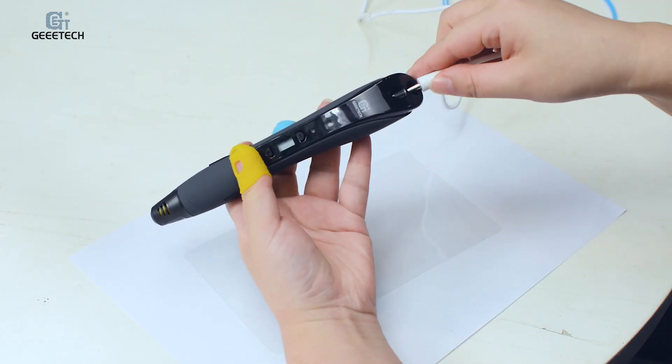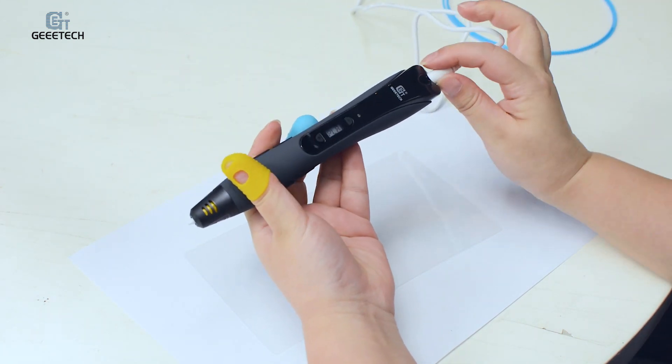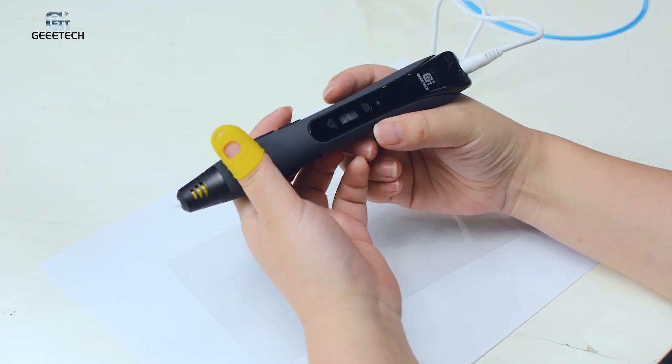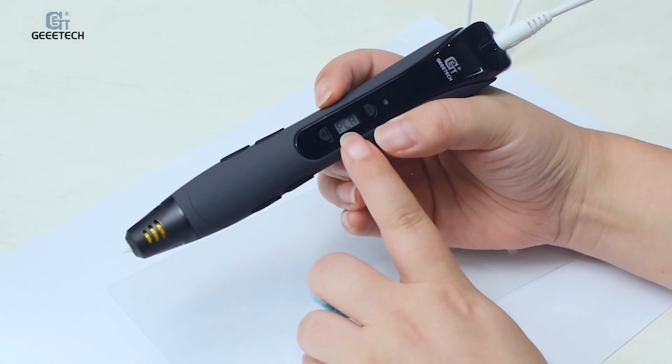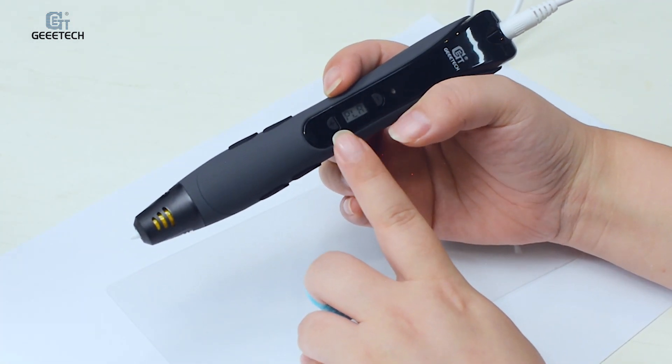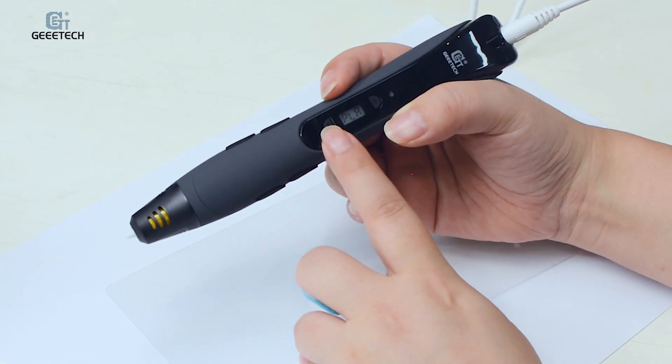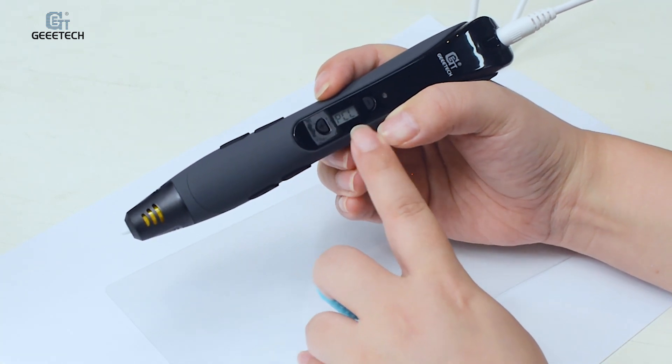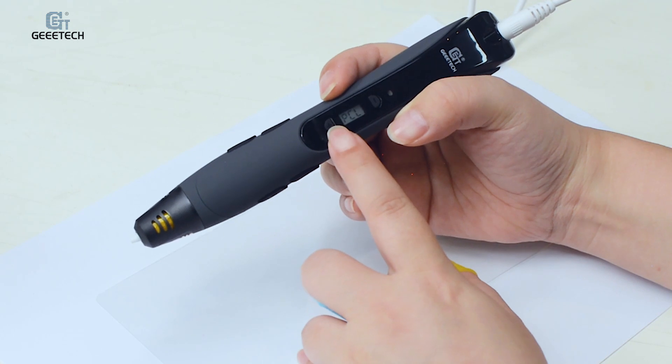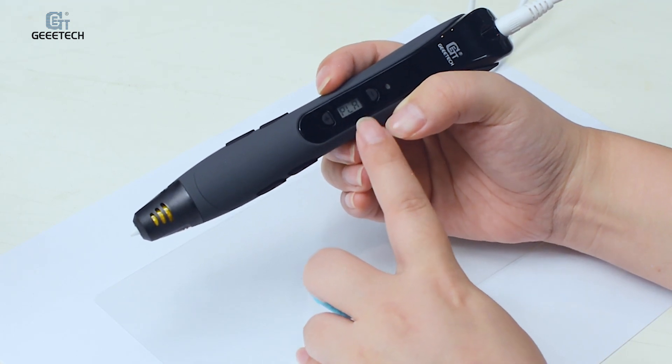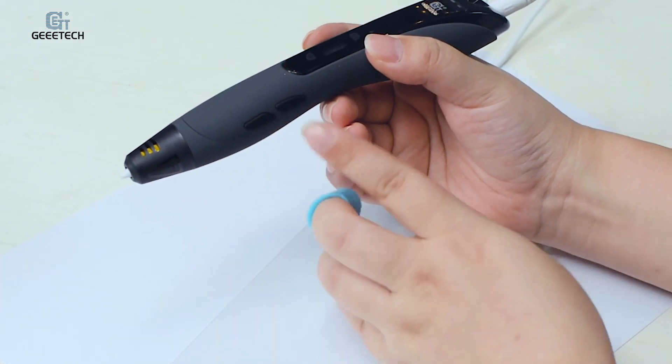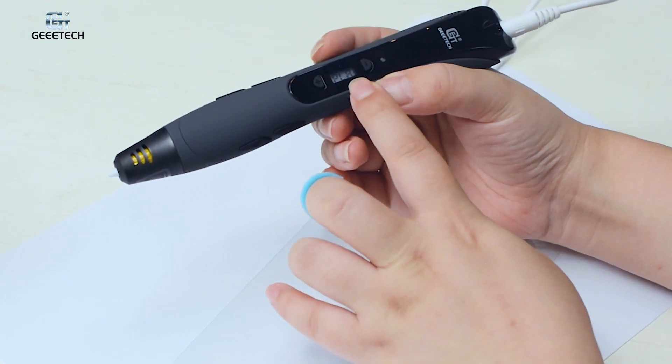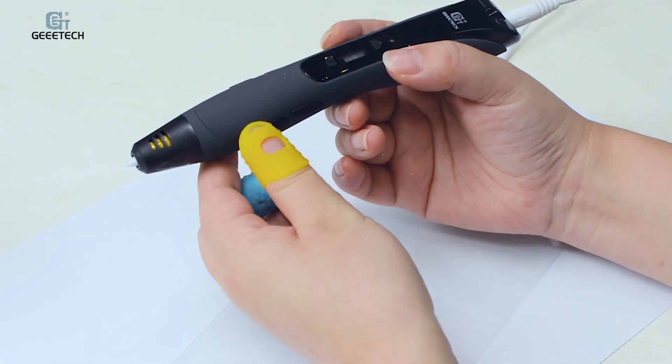First, let's power on the 3D printing pen. And then choose the filament you want to use. We have PLA, ABS, and PCL. Mostly we use PLA, so here we choose PLA. And then press this button to preheat the printing pen.